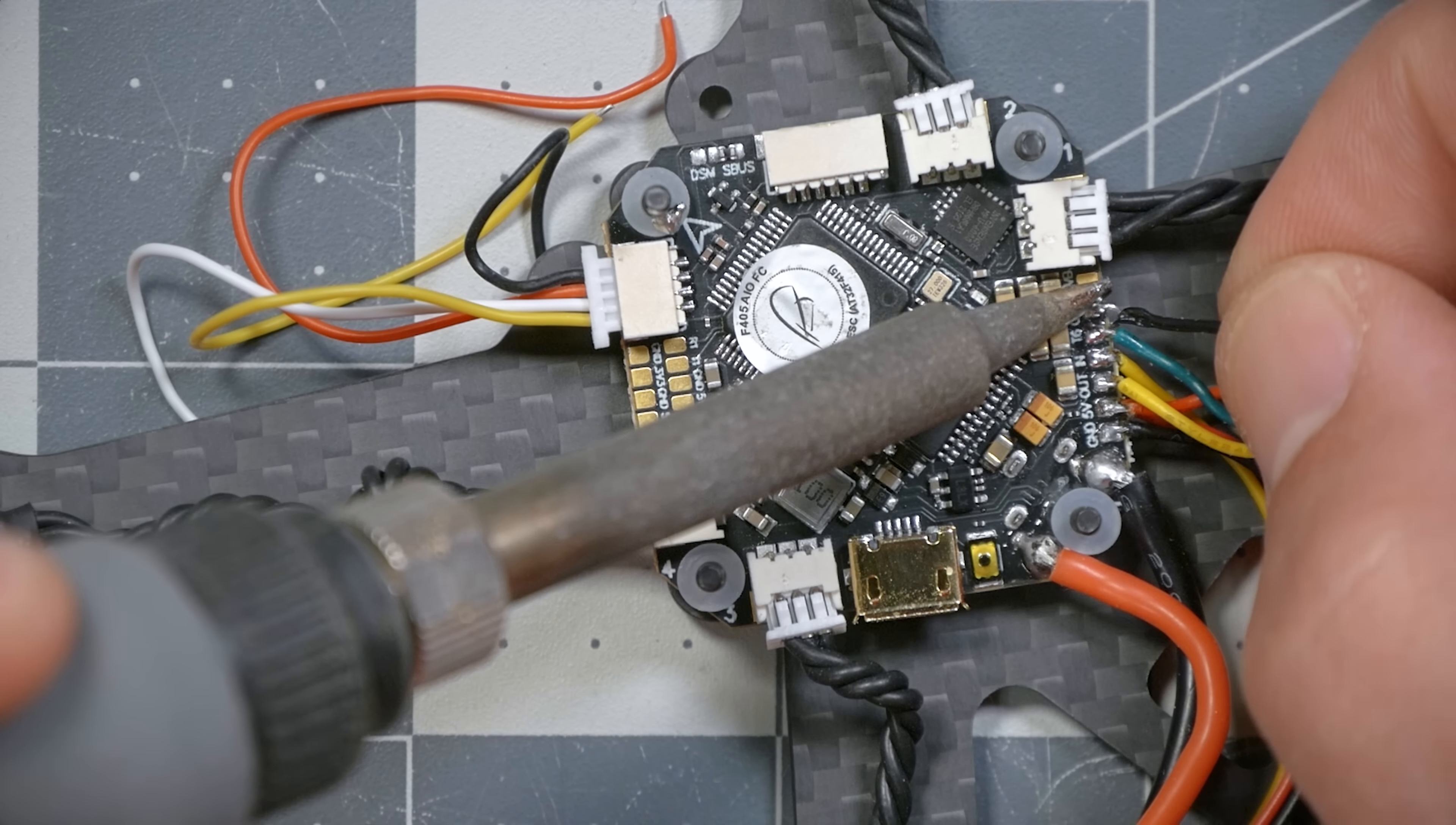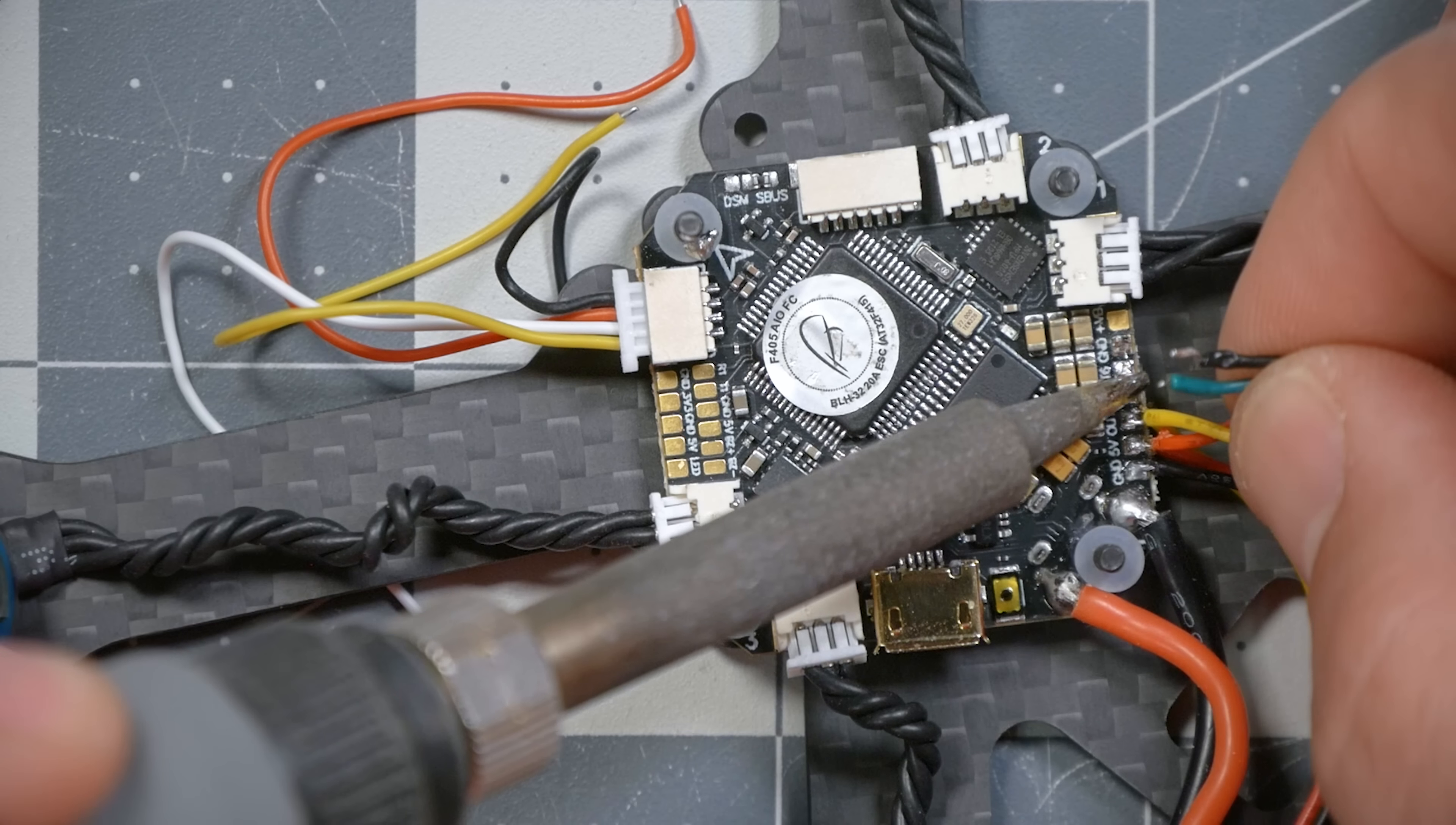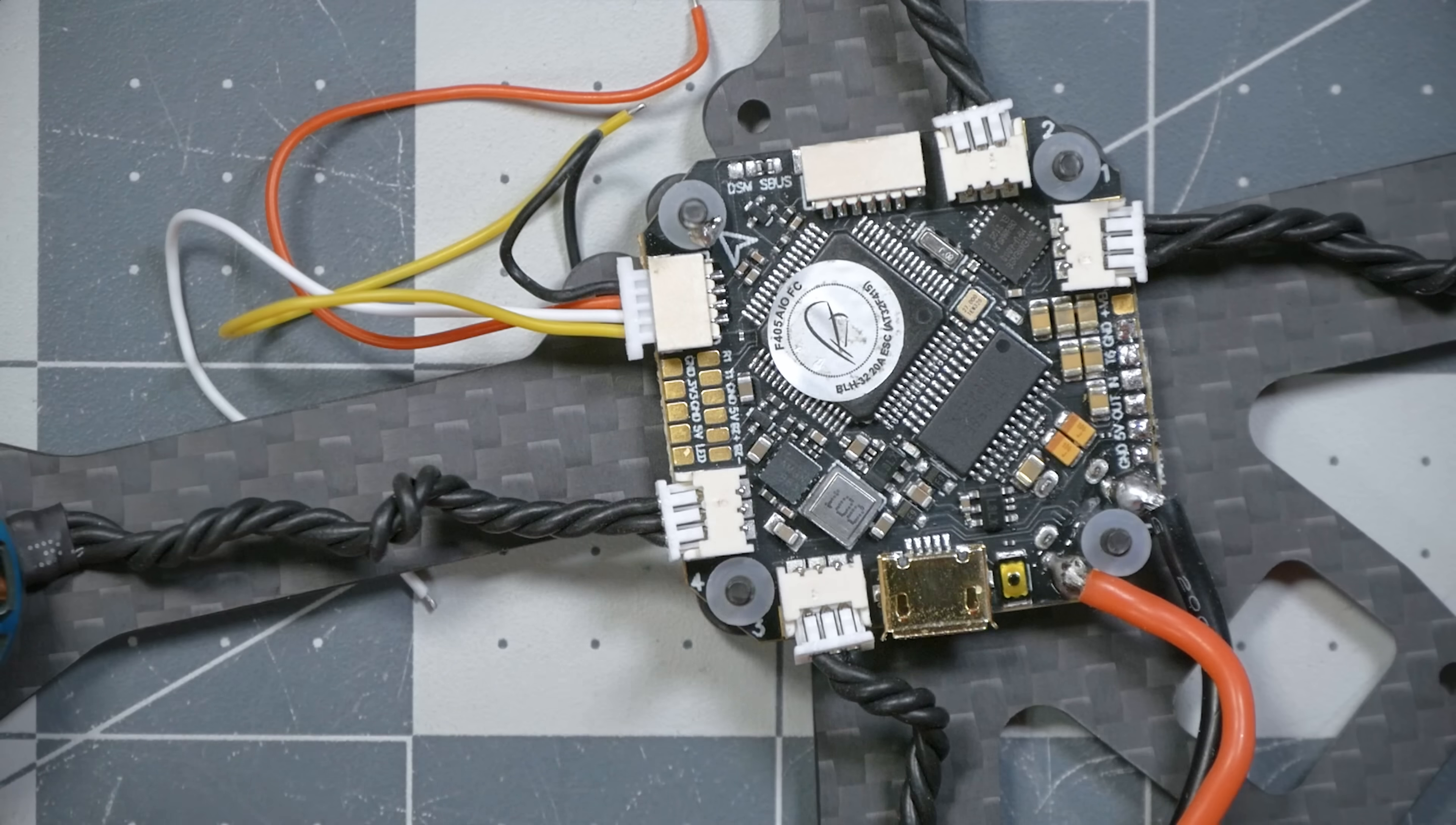What we're actually going to do is some de-soldering. We're going to remove these pre-soldered camera and video transmitter wires because, like I said, I am going to be using HD0, so I'm not going to be using an analog camera or video transmitter. So we don't need those. If you're doing an analog build, you're not following along with this tutorial, I think.